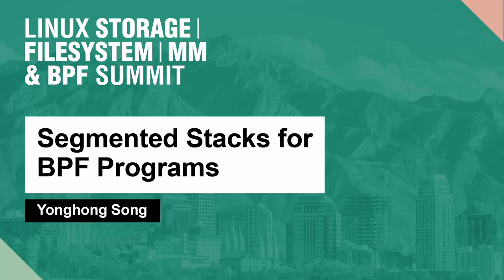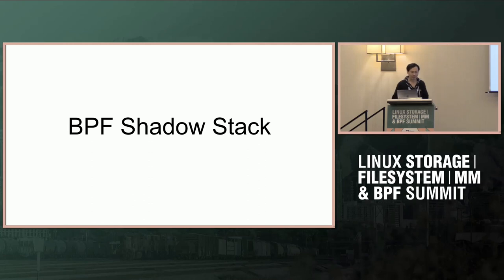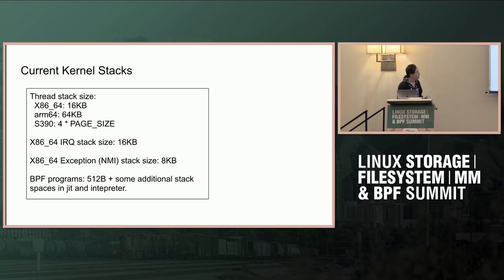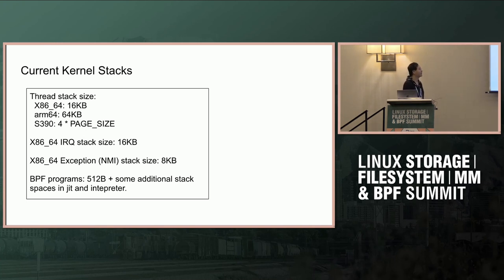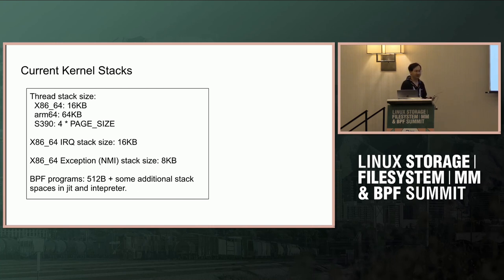Today I'll talk about BPF shadow stack, which tries to use a specific method to allocate a stack instead of using the default kernel stack. Here's a brief description of current kernel stack sizes: for x86, the thread stack size is 4K; ARM64 is 64K; s390 is also 4K (4 page sizes); the RQ size is 8-4 pages; exception and IRQ stack size is 2 pages; and BPF programs including sub-programs is basically 512 bytes.